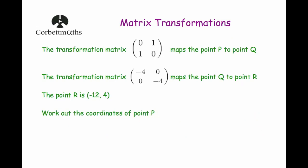Our last question: transformation matrix 0, 1, 1, 0 maps point P to Q. Transformation matrix minus 4, 0, 0, minus 4 maps Q to R. The point R is (−12, 4). We need to work out the coordinates of point P, which we'll call (x, y).